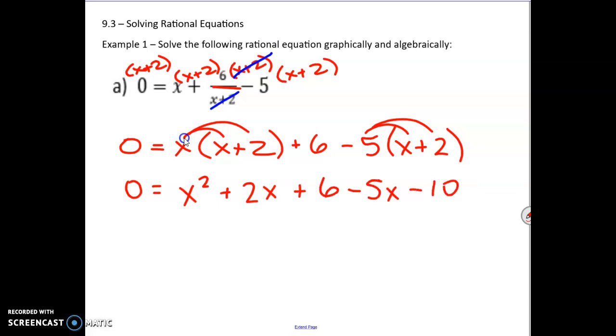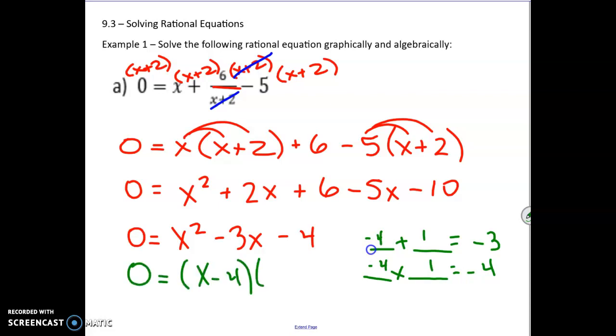There should be some like terms that you can combine. So the 2x and the 5x, when I put them together, we'll get minus 3x. And the 6 and the minus 10, when we put them together, we'll get minus 4. So from here, we have to factor. We're looking for two numbers that add to get to negative 3 and multiply to get to negative 4. So that should be negative 4 and positive 1, which means our factors here are x minus 4 and x plus 1.